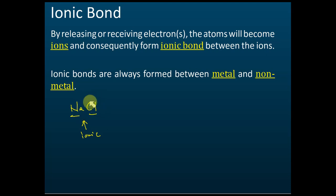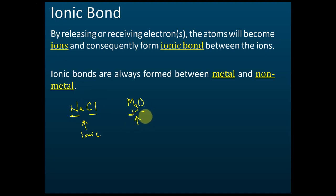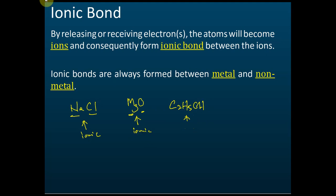Another example: magnesium oxide — is this ionic or non-ionic? It's ionic, because there is a metal and a non-metal. How about C2H5OH — ionic or non-ionic? This is alcohol, and it is non-ionic, because it is not metal with non-metal.